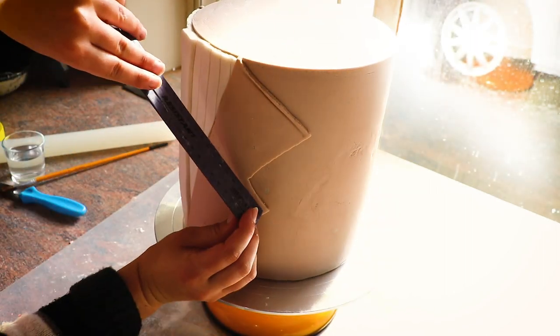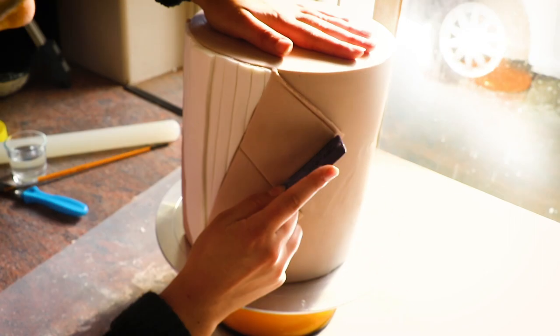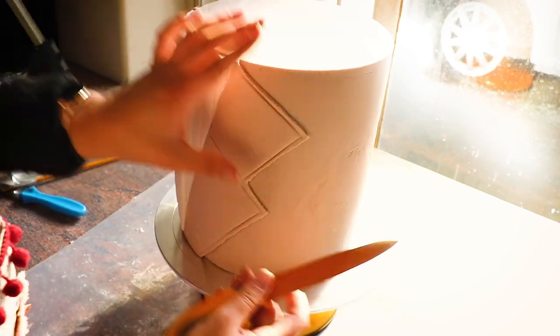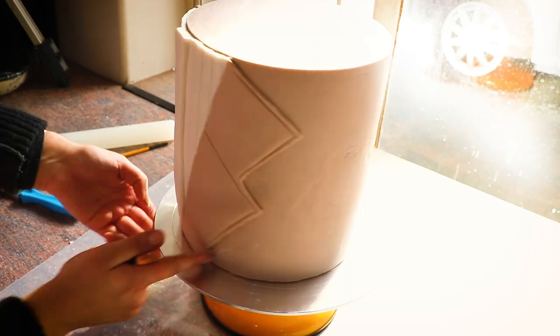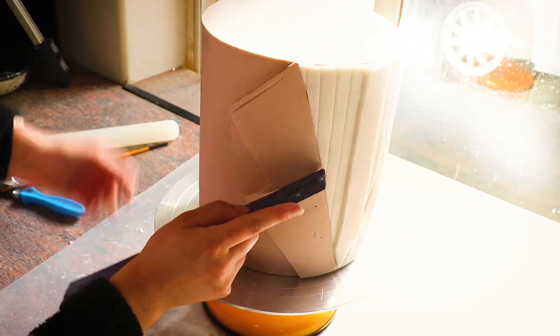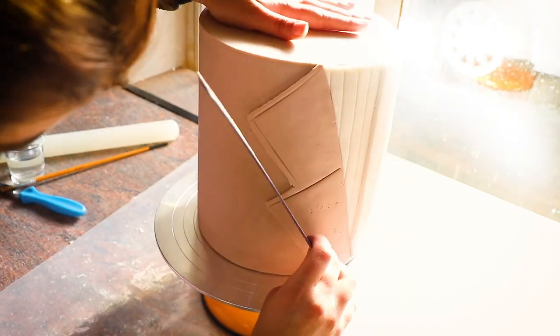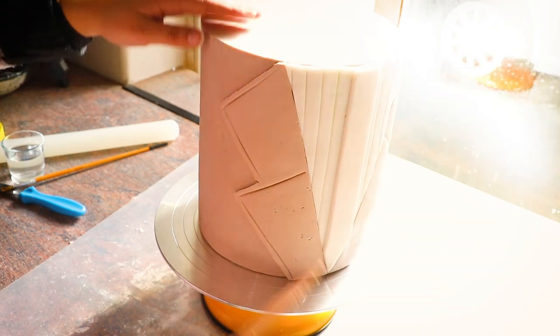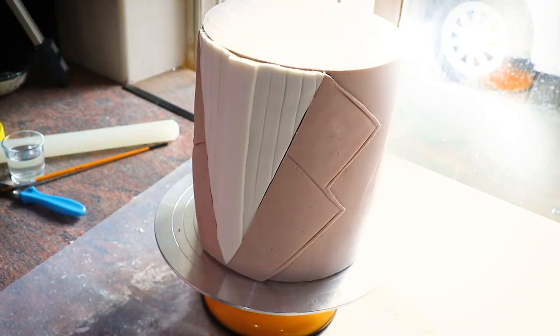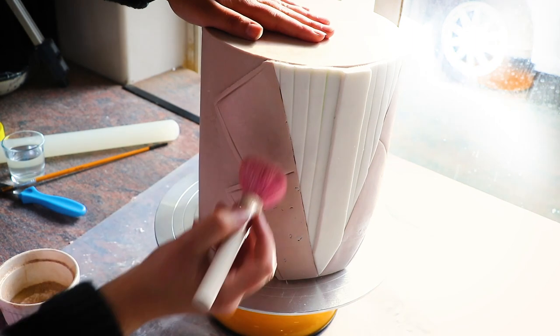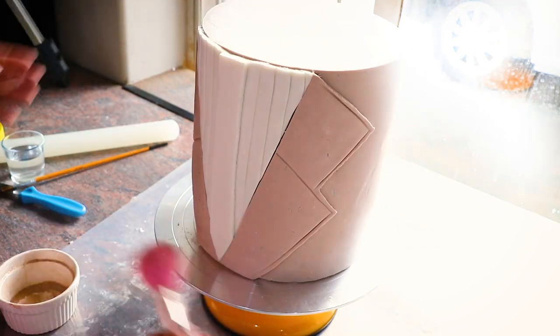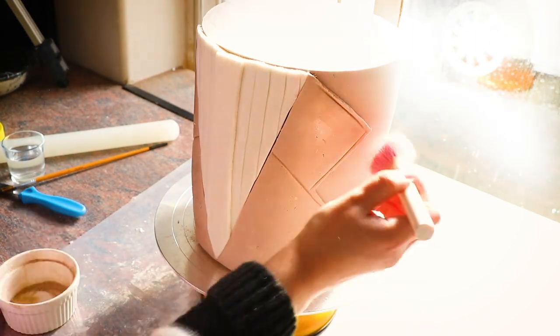I use my roulette to make indents to give them some definition. I dry brush the cake using a combination of satin white and antique champagne.